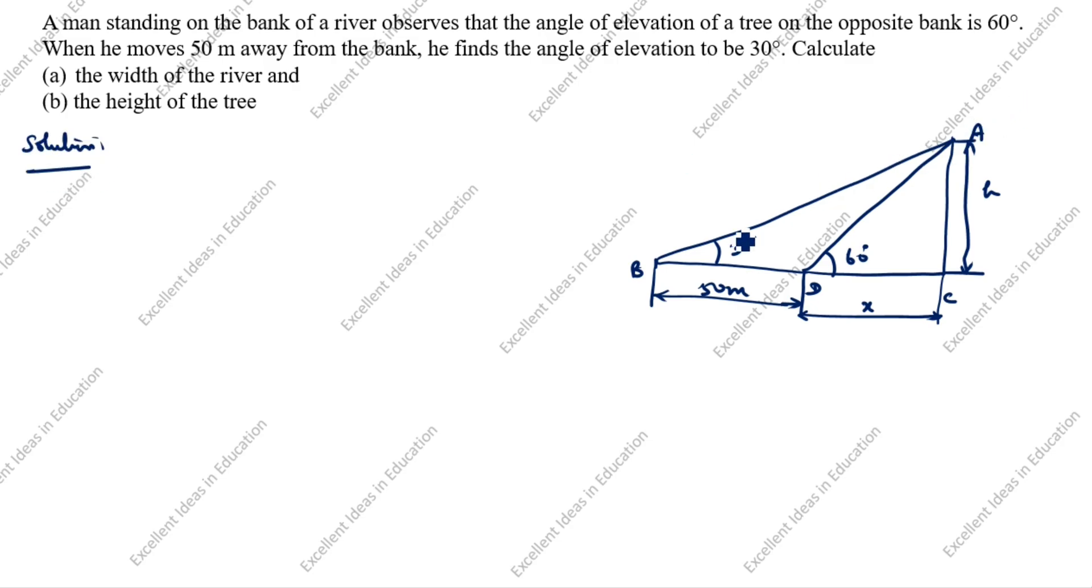First we will take this triangle, triangle ABC. I will draw here A, C, B. This is 30 degrees. Here is D. So this BC distance is 50 plus x.